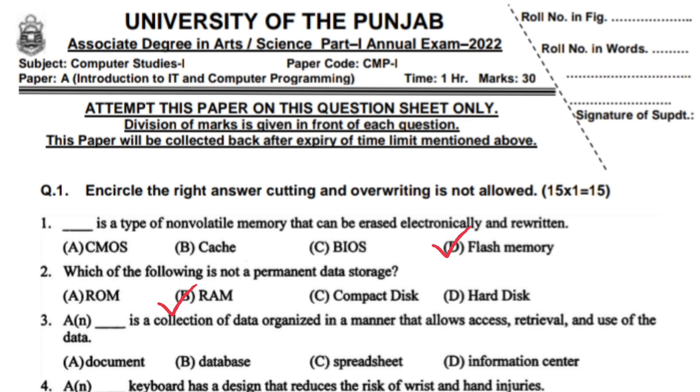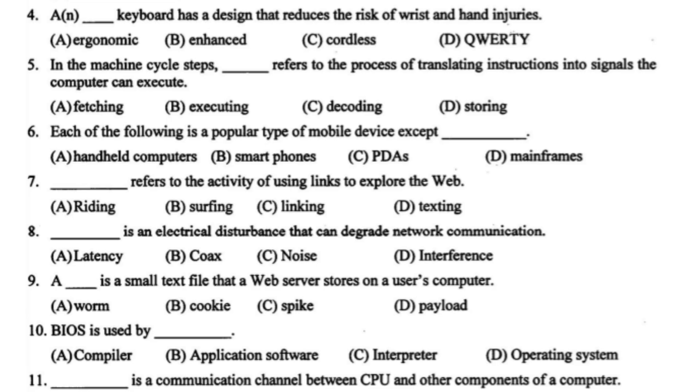An ergonomic keyboard has a design that reduces the risks of wrist and hand injuries. In the machine cycle step, decoding refers to the process of translating instructions into signals the computer can execute.